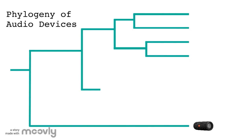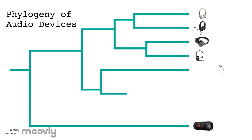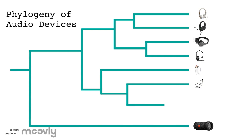Going back to the earbud lineage, we see that soon after the divergence from over-ear headphones, wireless earbuds emerge. Those wireless earbuds continued to evolve and produce true wireless earbuds that themselves go on to produce earbuds with extra buttons and those with earhooks.